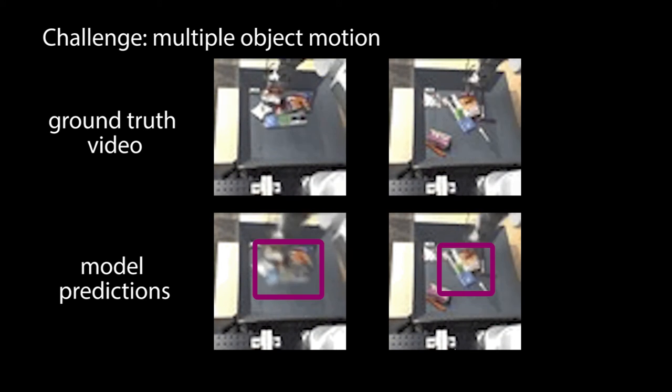One challenging scenario is multiple object motions through collision. The model can reason about these scenarios to predict that the objects will move together.